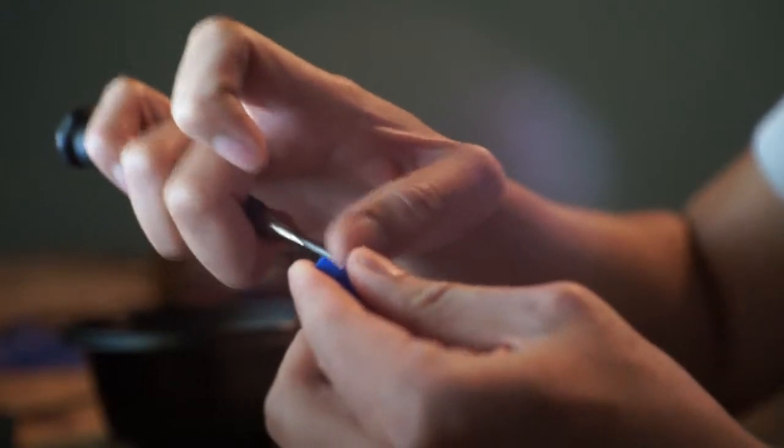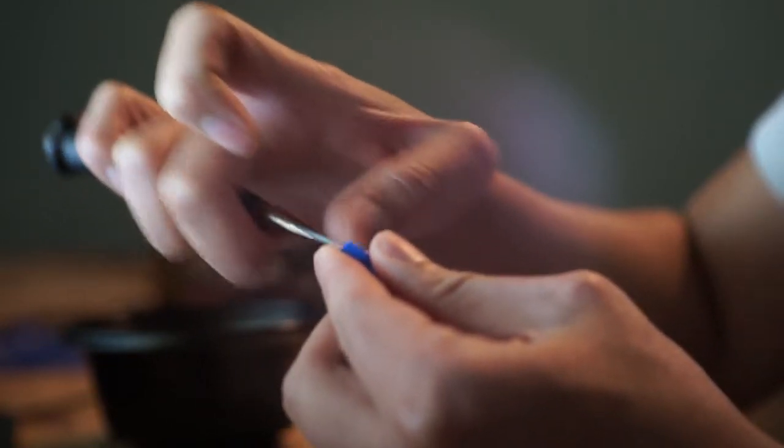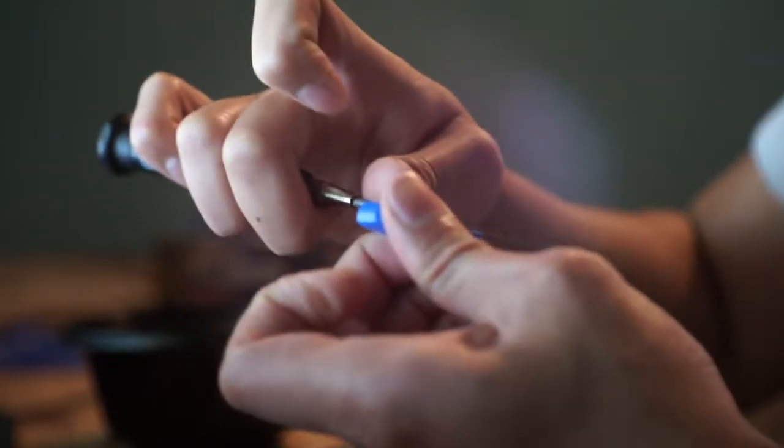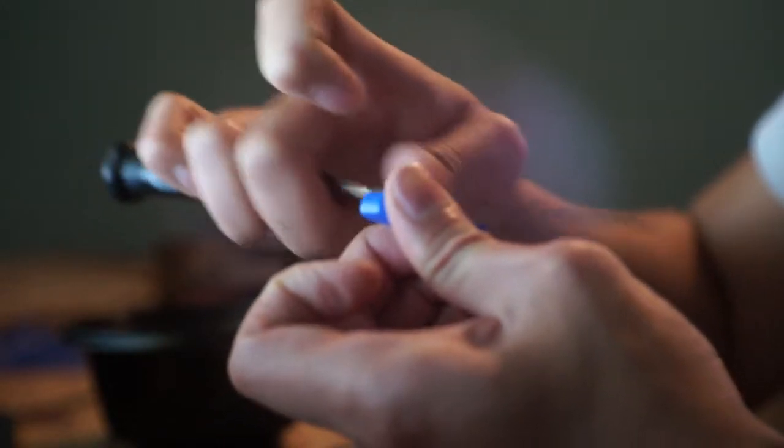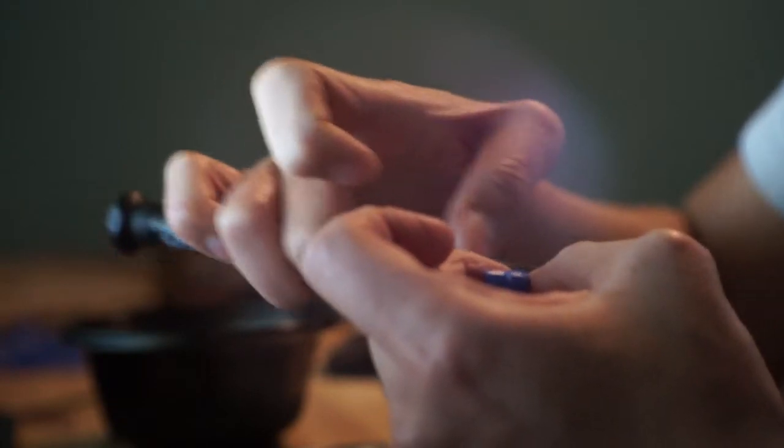One of the reasons why I wet sand is because after you're filing, all you gotta do is stick it in the bowl and all the dust comes off, so there's pretty much nothing to clean up. Before, I used to do it dry and I'd just sweep - it was a mess, all over my hands. This is actually the cleanest method that I can think of.